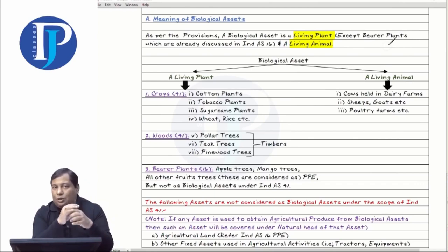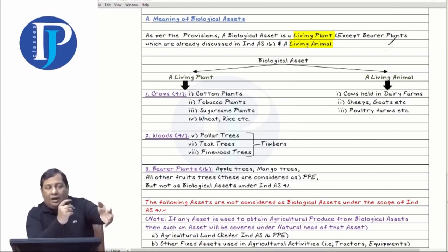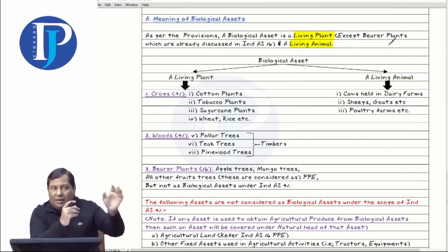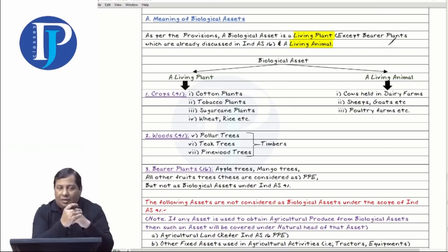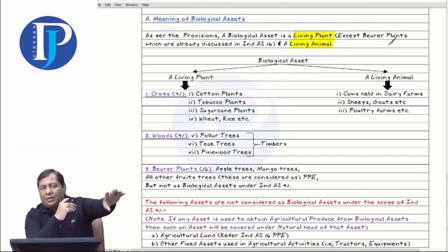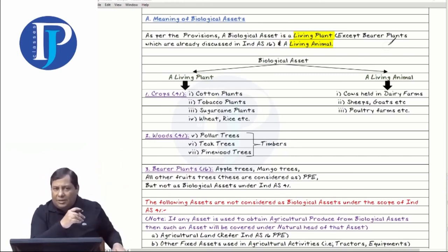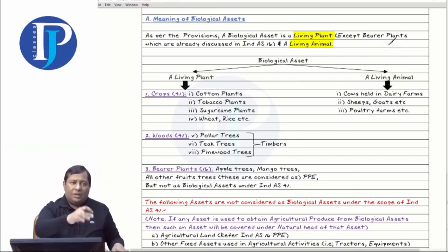Take the example of sugarcane — you cultivate and harvest the yield. Rice, wheat, cotton, sugarcane — all of these crops which are cultivated are considered as biological assets. The crops are harvested.